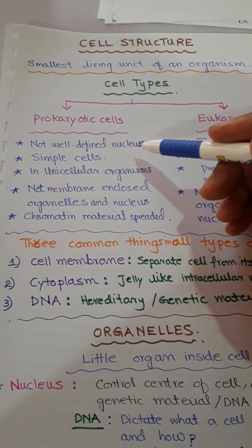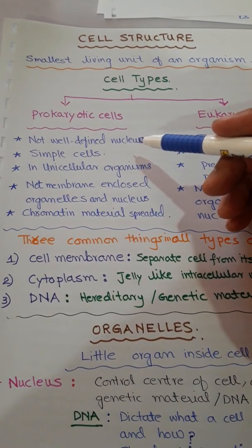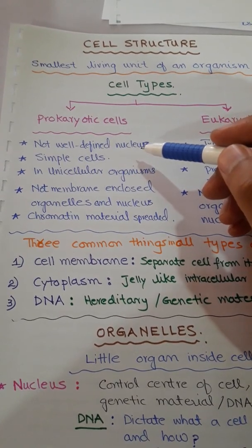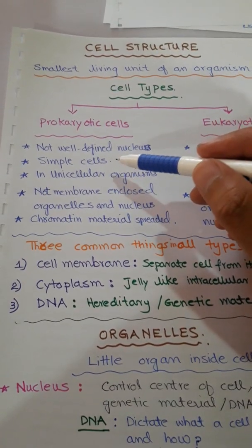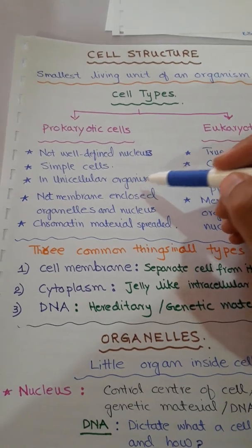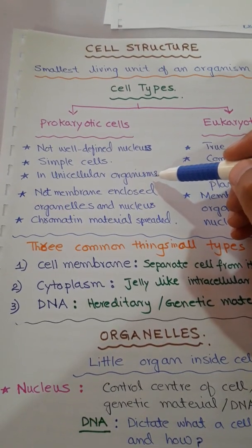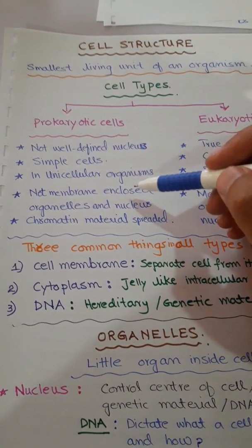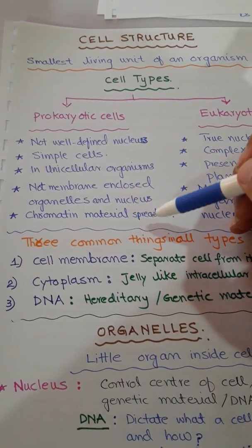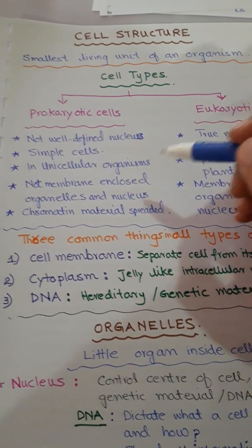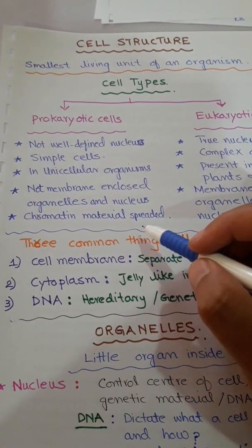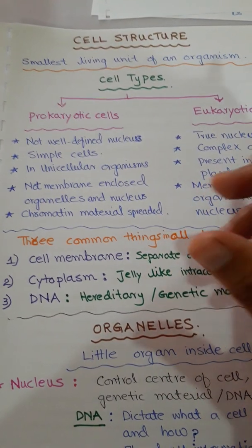Prokaryotic cells are simple cells. They are unicellular organisms like bacteria, which do not have membrane-enclosed organelles. The nucleus is not membrane-bounded; instead, the chromatin material is present inside the cytoplasm but is spread throughout it.